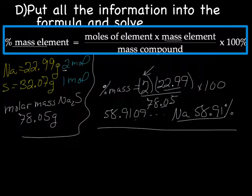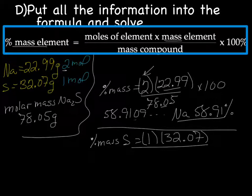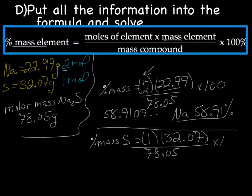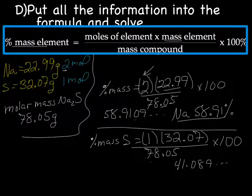We then do this all over again, but this time with sulfur. So percent mass of sulfur equals the moles of sulfur, this time we only have 1, times the mass of sulfur, which is 32.07, divided by the mass of our compound, which is Na2S, which is 78.05 multiplied by 100. And I got 41089 percent. We once again have 4 sig figs, so our final answer will be S is 41.09 percent.